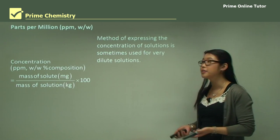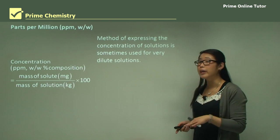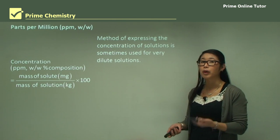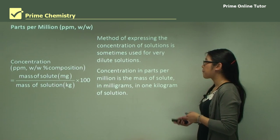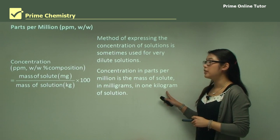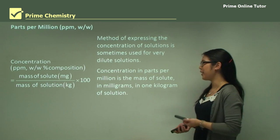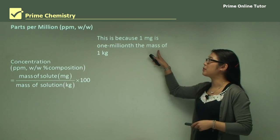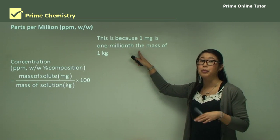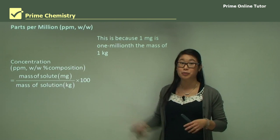Parts per million in weight-to-weight — make sure both are in weights. It's used for very dilute solutions because it's parts per million, so one millionth. The mass of solute is in milligrams and the solution is in kilograms, because one milligram is one millionth of a kilogram. So if it has milligrams and kilograms, we can always use parts per million.